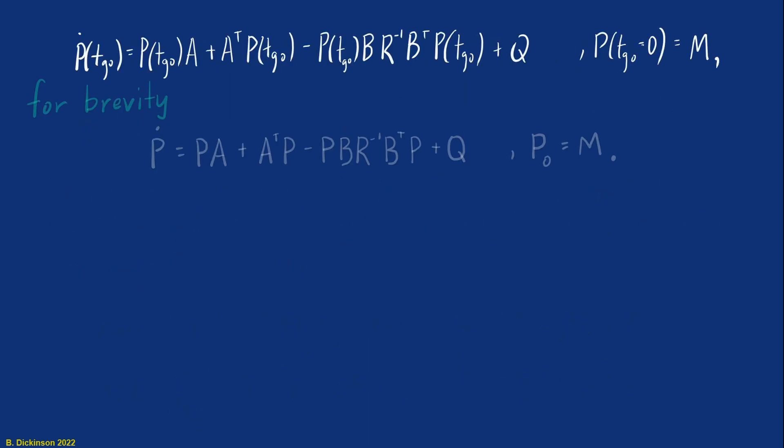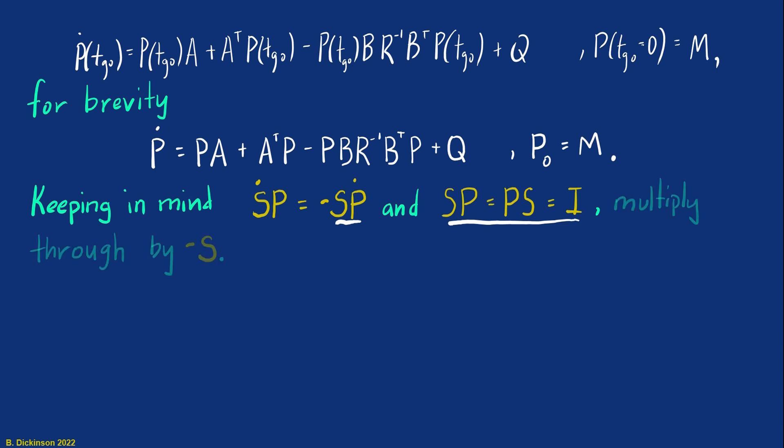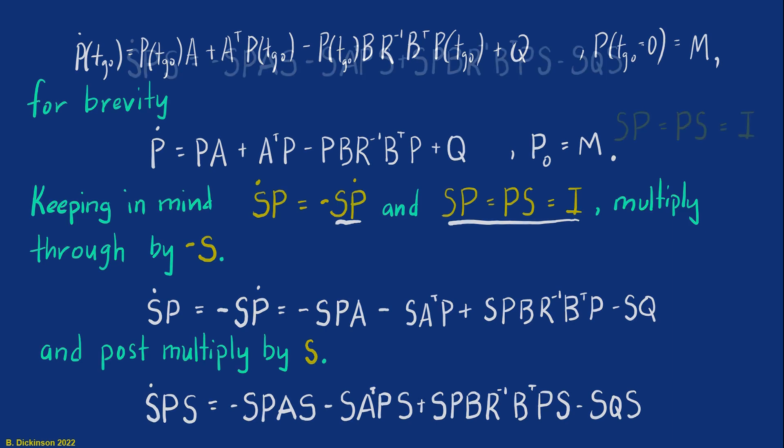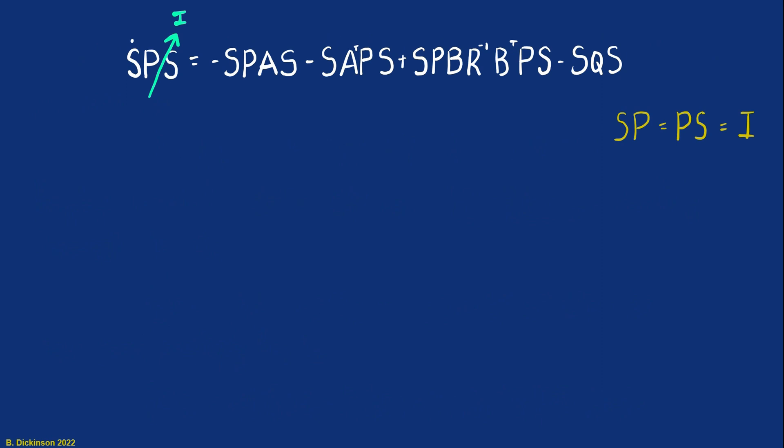Here's our Riccati equation. And for brevity, now I'm going to omit the time to go dependence. We're first going to multiply this Riccati equation through by minus S. And then we're going to post-multiply by S. Okay, look, on the left-hand side, that product PS is identity. And on the right-hand side, we can cancel a whole bunch of terms because they're all identity. And so we're left with another matrix equation that's quadratic in S. And so you might say, well, what's with all this fancy footwork? What have we gained by doing this manipulation?